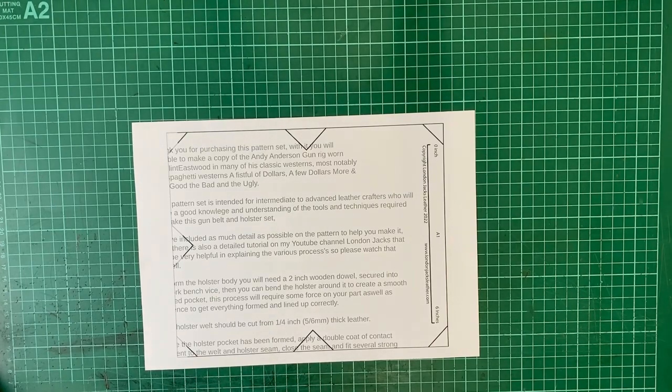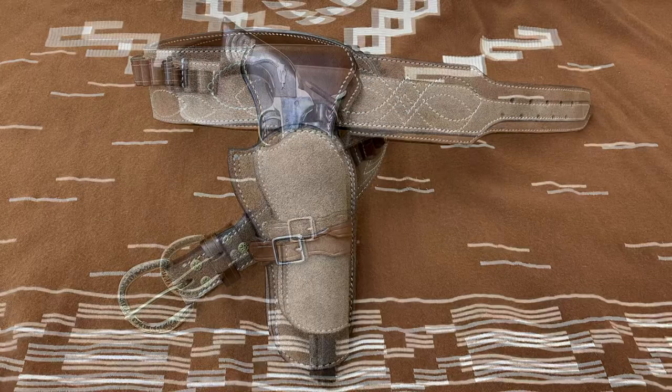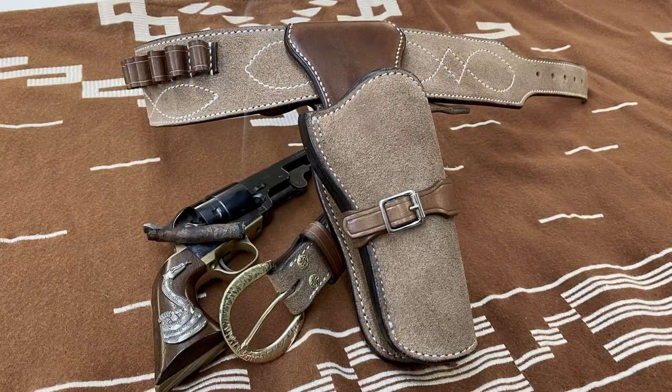These are the instructions for printing out a PDF digital pattern from my website londonjacksleather.com. This particular pattern is 16 pages long and with it you'll be able to build a copy of the rig used by Clint Eastwood in many of his classic westerns.